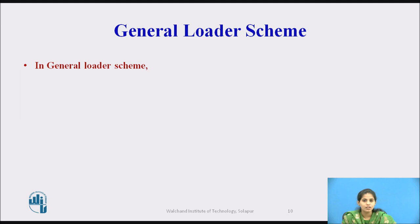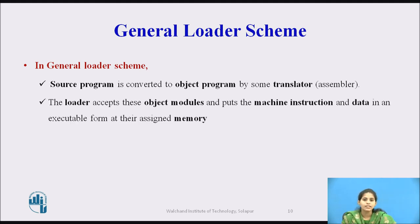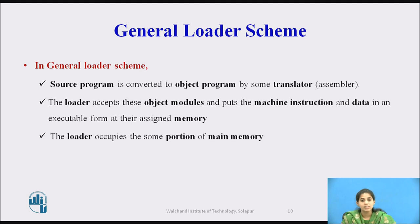Now next we see the general loader scheme. In the general loader scheme, the source program is first converted to the object program by some translator or assembler. The loader accepts these object modules and puts the machine instructions and data in an executable form at their assigned memory locations. Then the loader occupies some portion of the main memory.